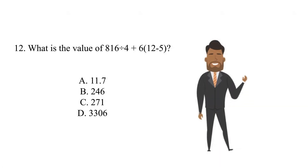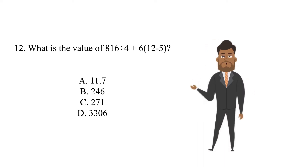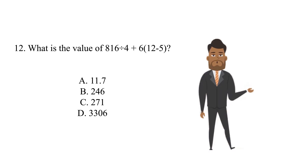Question 12. What is the value of 816 divided by 4 plus 6 into brackets 12 minus 5? a. 11.7, b. 246, c. 271, or d. 3306.